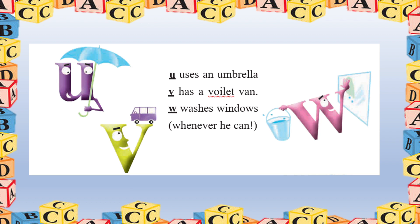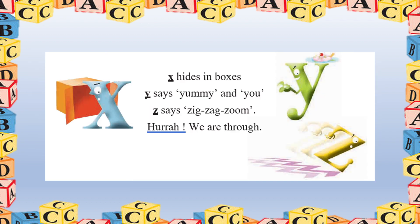X hides in boxes. Y says yummy. Z says zig-zag zoom — hooray, we are through! Repeat after me — X hides in boxes, Y says yummy, Z says zig-zag zoom, hooray we are through! Very good! Repeat again — X hides in boxes, Y says yummy, Z says zig-zag zoom, hooray we are through!